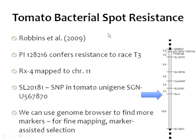The example I've chosen is from a paper published by Matthew Robbins when he was with David Francis' group at Ohio State University. It was known that PI128216 confers resistance to bacterial spot race T3. In this paper, they map the resistance to chromosome 11. You can see the location of RX4, and we have the SNP marker SL20181, which was located in a unigene on SGN.